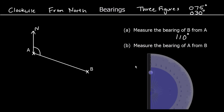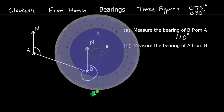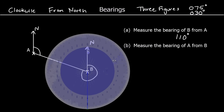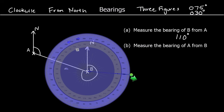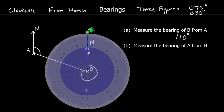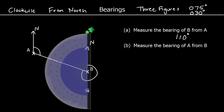For the second question, we want to measure the bearing of A from B. So this time we need a north line at B, and again we're measuring clockwise from the north line — so it's this angle here. If you have a protractor that's a full circle, you could spin it around until 0 is lined up with the north line and measure around until we get to the line, and that is 290 degrees. So the answer will be 290 degrees.